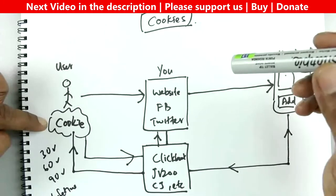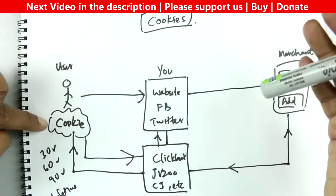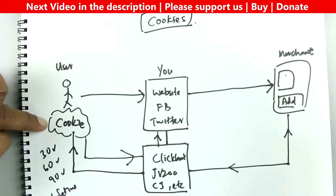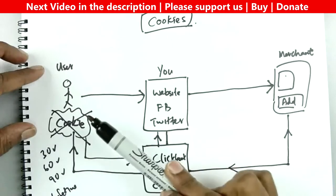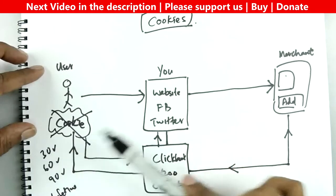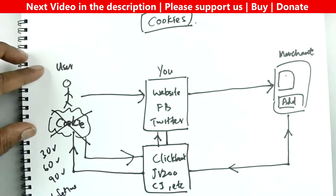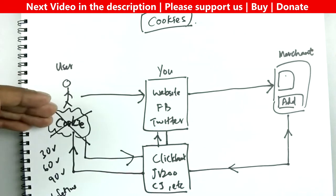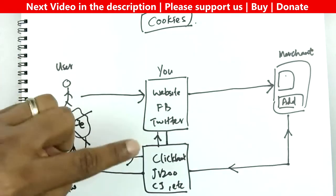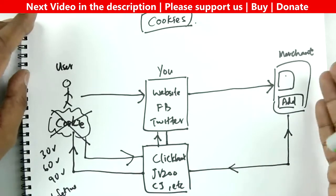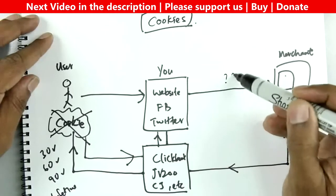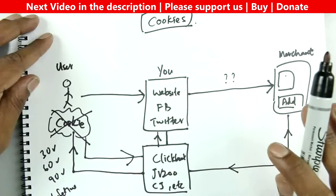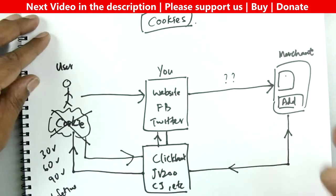Another way a user can remove cookies is by clearing the cache and cookies in their browser. All modern browsers like Chrome and Firefox allow you to clear browsing history and cookies. If they clear cookies after clicking your affiliate link but before completing the transaction, you don't get commissions. However, the chances of that are very small - it's rare that someone clears cookies between clicking and completing a transaction, since online transactions typically take only minutes, or at most an hour.